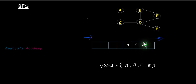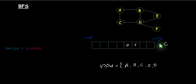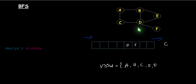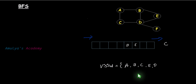Next, remove the next node from the queue, which is C. Now add all unvisited adjacent nodes of C. C's adjacent nodes are A and D — A is already visited and D is already visited, so there is no need to add any nodes to the queue or mark anything as visited.